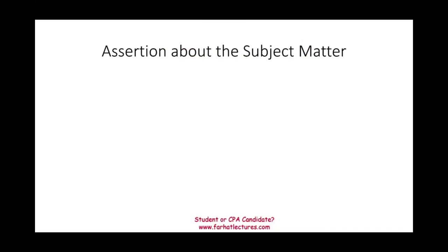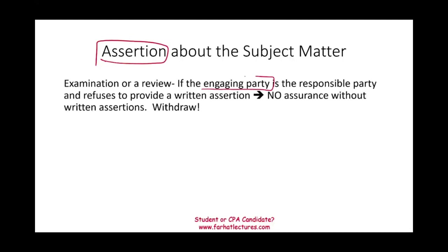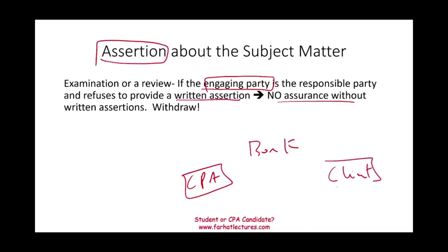Let's talk about assertion about the subject matter. For an examination or review, if the engaging party is also the responsible party and refuses to provide a written assertion, then you cannot provide assurance and must withdraw. For example, consider a bank engaging a CPA to examine a loan agreement with a client. The bank is the engaging party and also the responsible party for the written assertions. They have to tell us what they need assurance about — those are the written assertions. Without written assertions, we withdraw.